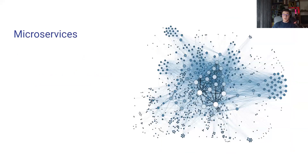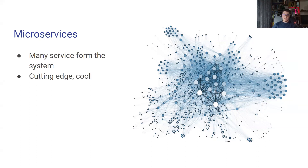On the other end of the spectrum, we have microservices. Here's a representation of a very complicated system where each node on the screen is one microservice. I'm sure there are actually real-world systems that look a lot like this. When we say microservices, we mean that many individual services, each doing their own job, form the whole larger system. These days, it's considered cutting-edge and cool. Everybody wants to be working with microservices because they are very popular — it's challenging to work with them, but also fun and exciting. One strong advantage of microservices is that, at least in theory, they are infinitely scalable. Whenever you want to scale something, you can scale that service either vertically or horizontally, or extract a bottleneck into a separate service and scale that independently.